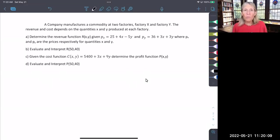Hi everyone. We're going to take a look at a multivariable function and see how we can put the pieces together to form a revenue function and a profit function. In this example, we have two factories that manufacture commodities: factory X and factory Y. The revenue and cost depend on the quantities produced at each factory.